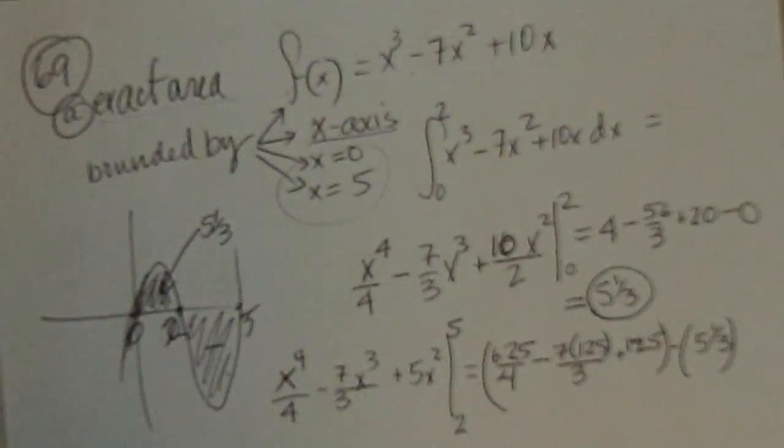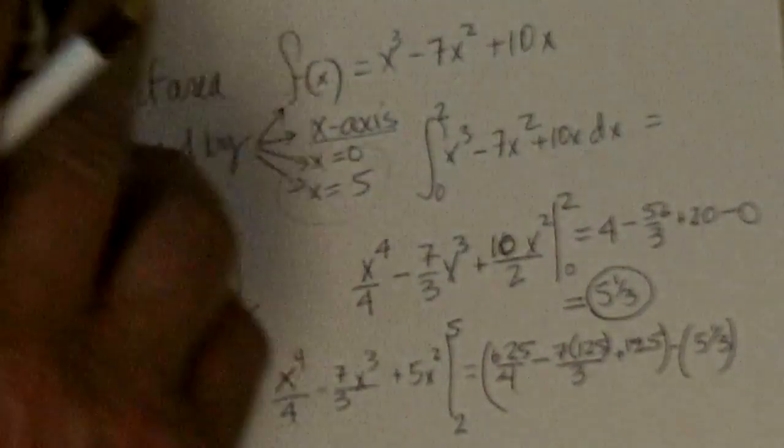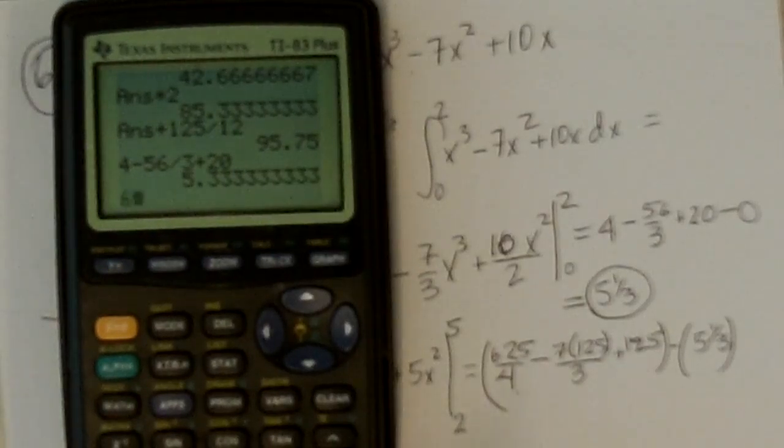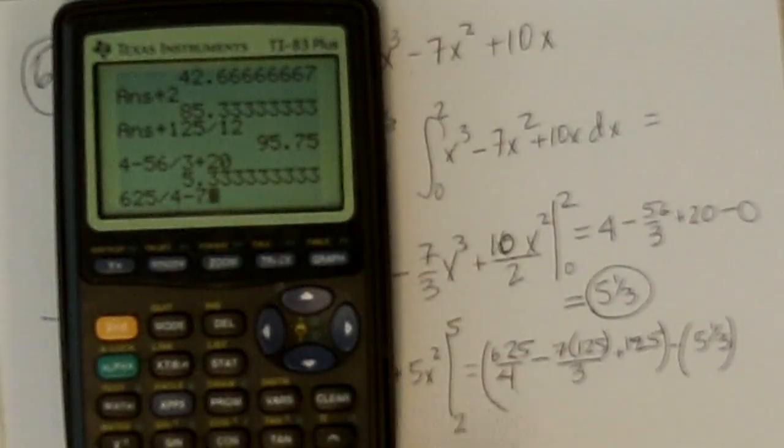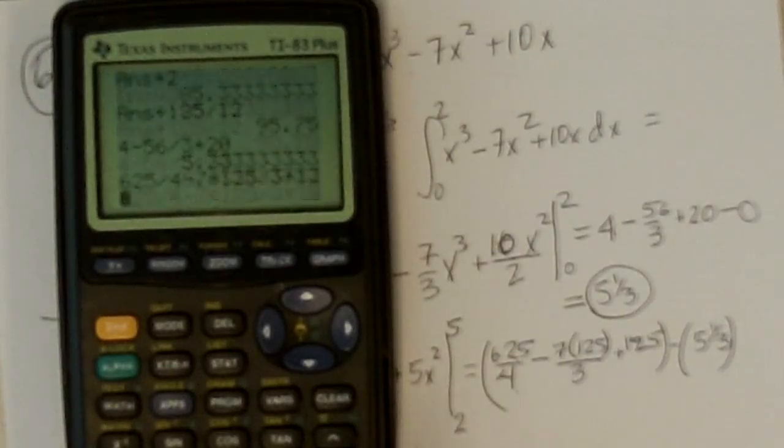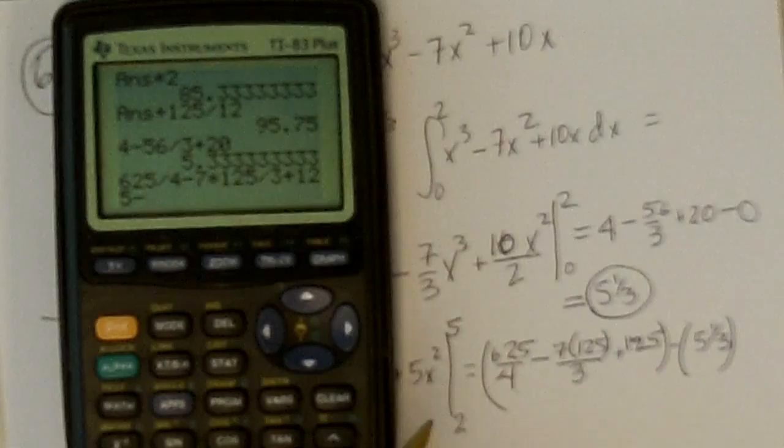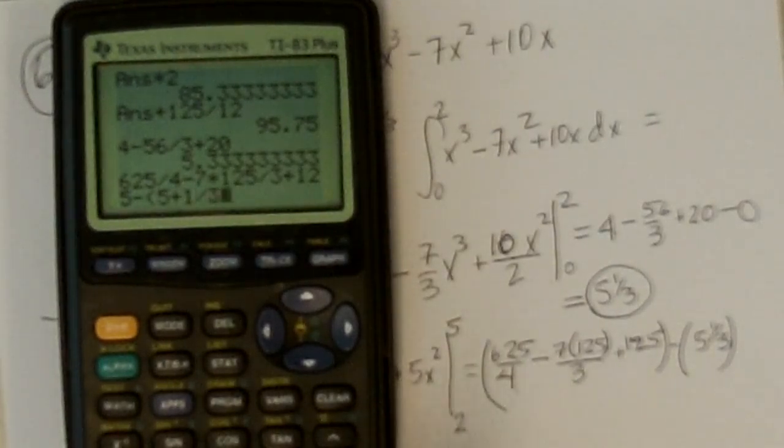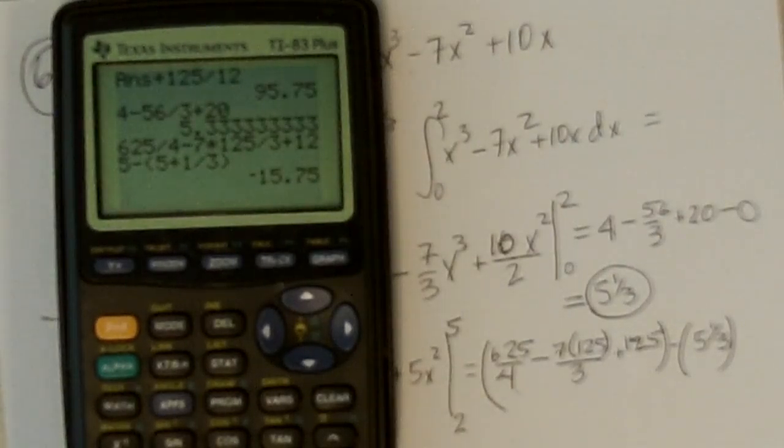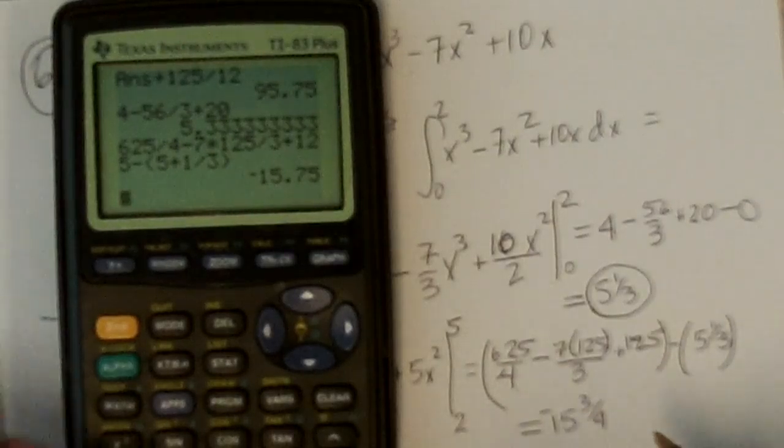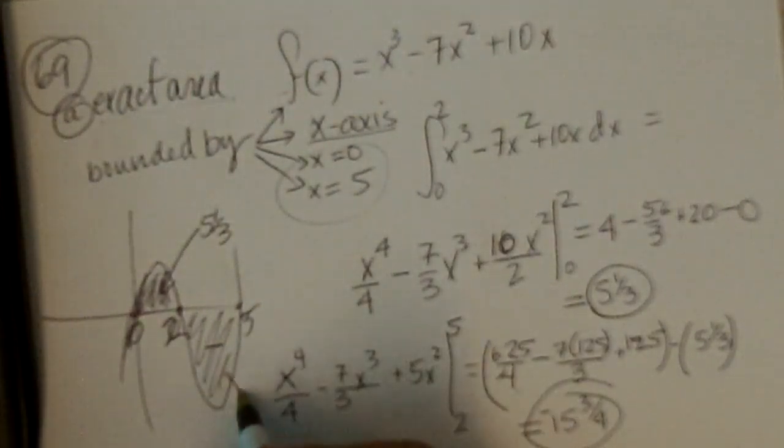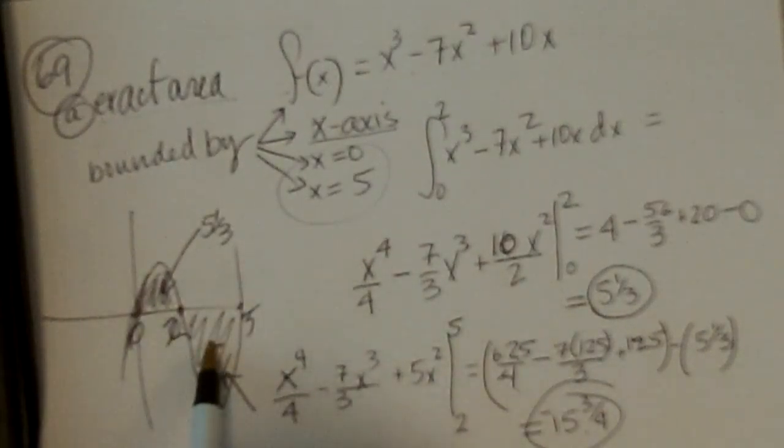Actually, I got positive 5 and 1 third. Okay. And so I'll take this, subtract that, and I get... Let's see. 625 divided by 4 minus 7 times 125 divided by 3 plus 125 minus parenthesis 5 plus 1 divided by 3. And I get negative 15 and 3 quarters.